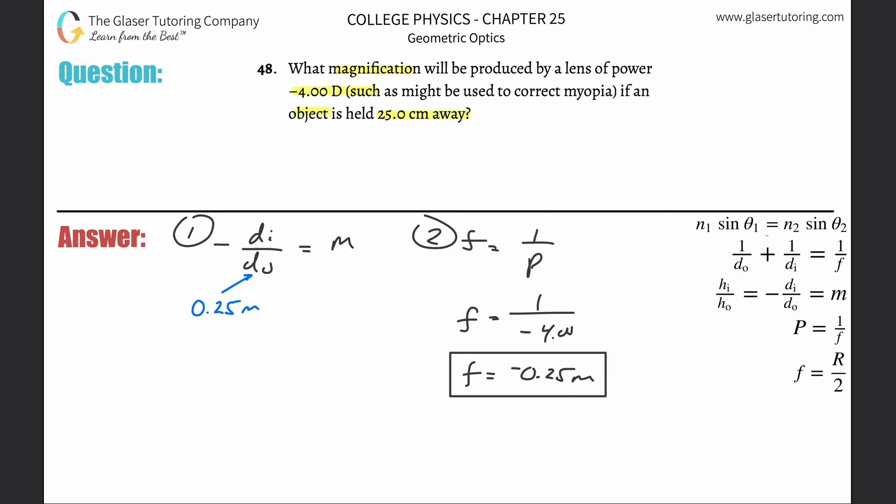Knowing the focal length and object distance, I can relate those two via the thin lens equation: one divided by the object distance plus one divided by the image distance equals one over the focal length. If I want to solve that for image distance, just subtract this term over to the right, then cross multiply - this goes up, this whole thing comes down, and there's your formula.